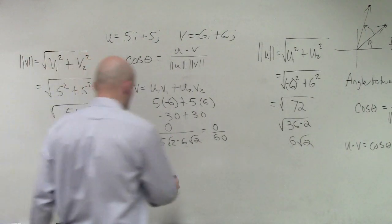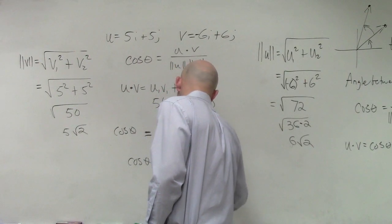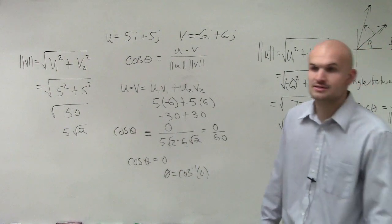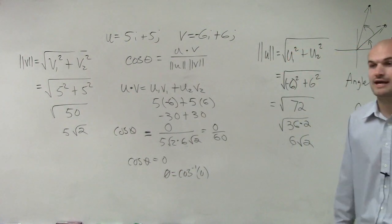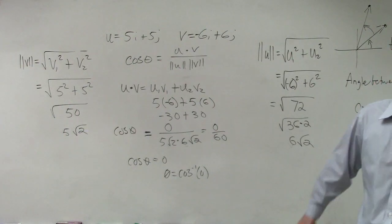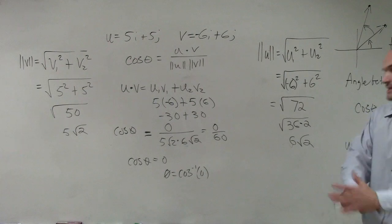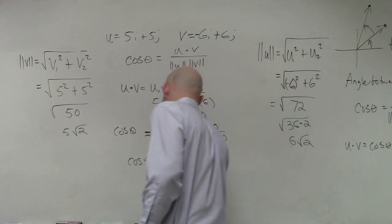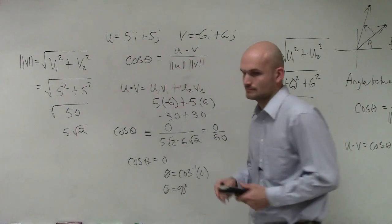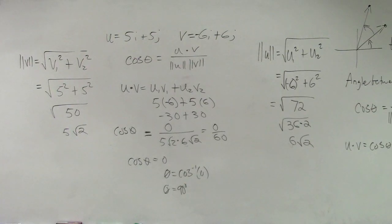Cosine of theta equals 0. So therefore, theta equals inverse cosine of 0. Remember, the inverse of cosine has to be between 0 and 2 pi. So what is the only angle between 0 and 2 pi that has a cosine equal to 0? That is going to be 90 degrees. There you go. Done.